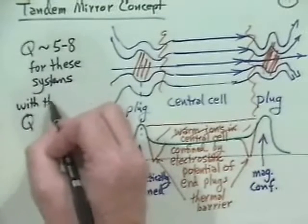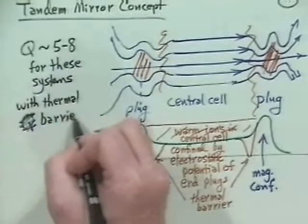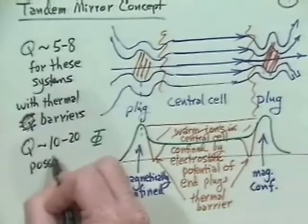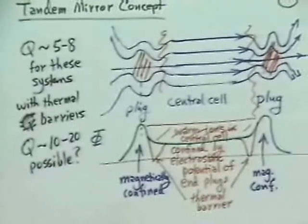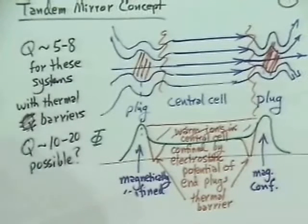For tandem mirror systems, Q turns out to be about 5 to 8. One problem is that ions trapped in the electrostatic potential are well-confined, but electrons see an inverted potential and flow out freely. Adding thermal barriers — which create a dip in the potential — improves electron confinement. With thermal barriers, Q of order 10 to 20 appears possible in a reactor scheme. The conceptual evolution went: simple mirror → Ioffe bars for MHD stability → tandem mirror plugs → thermal barriers.